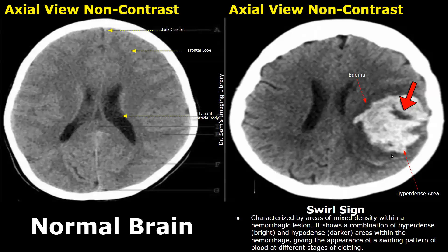There is another feature here called the swirl sign. The swirl sign is the name given to areas of mixed density within the hemorrhage — a combination of hyperdense and hypodense areas, basically heterogeneous areas within the hemorrhage. The lower density areas are due to active bleeding, which is unclotted blood, and the high density areas are clotted blood. The low density areas indicate active and ongoing bleeding; prognosis is very poor in this situation.